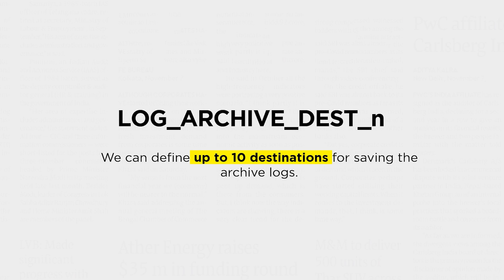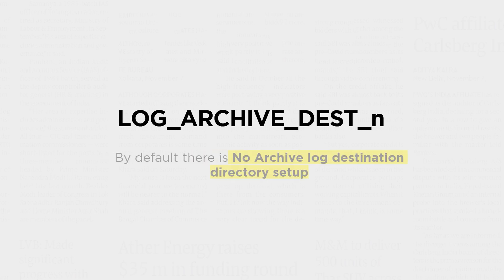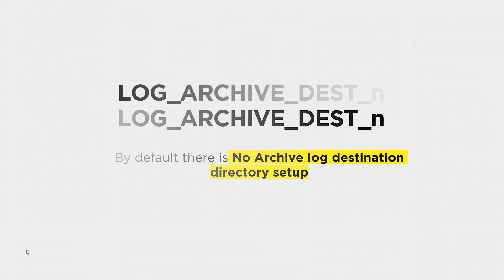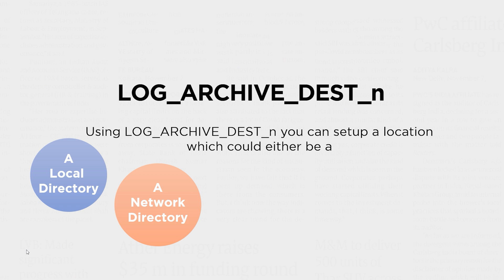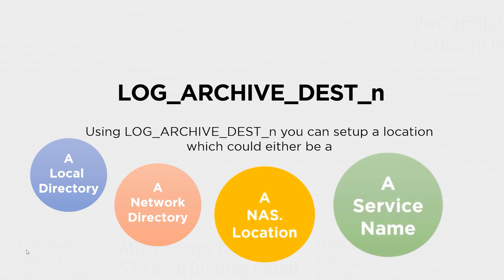If you have more than one location set up, then you will have redundant copies of archive logs created by the Oracle database server. By default, there is no archive log destination directory set up in Oracle database, which means if you want to use one, you have to set it up first. Using LOG_ARCHIVE_DEST_N, you can set up a location which could be a local folder on your hard drive, a network directory, a NAS location, or a service name if you have a Data Guard setup.